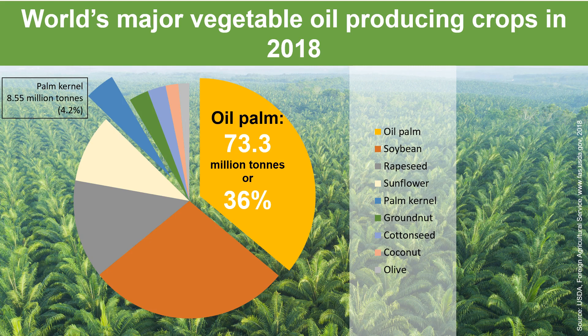So a total of 40 percent of vegetable oil is supplied by palm oil. Other major oil-producing crops include soybean — our main competitor — rapeseed, sunflower, groundnut, cottonseed, coconut, and olive.